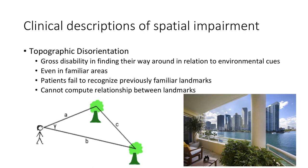Let's go over some clinical descriptions of spatial impairment. After a head injury, there is a high likelihood of obtaining topographic disorientation, which is a disability in finding your way using environmental cues — even if those environmental cues were familiar before the injury. For example, if someone with topographic disorientation is blindfolded in their own home, they will often not know how to point to the furniture, such as the TV or the couch.